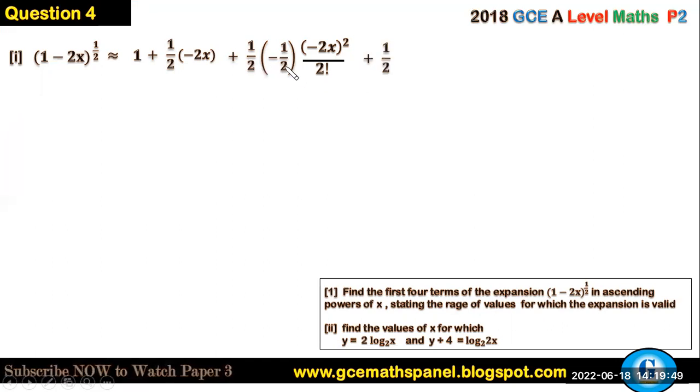So we will see at the third term. Now for the fourth term, we will have this power, which has been brought down, a half into a half minus 1 minus a half, minus a half minus 1 again, minus 3 on 2, times the term now minus 2x to what power now? Minus 2x to the power 3. All this on how many factorial? 3 factorial.